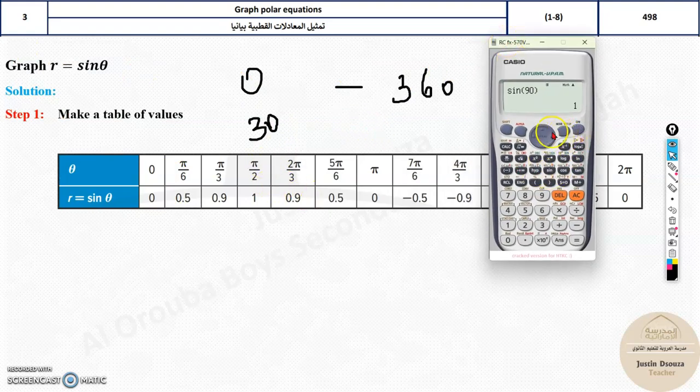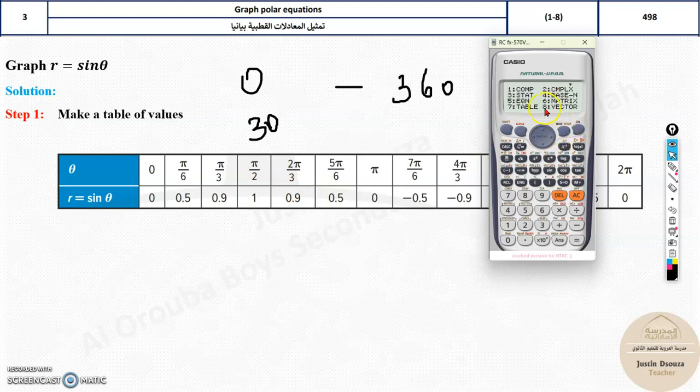So there is a shortcut method. You can do it in your calculator. All you need to do is press mode and you can see there is a table. This is the table of values, right? Let's click on that table. What is the function you need to find the table of values for? It's sinθ, right? So put sine. There is no theta option, but there is x. So f(x) = sin x. Then press equal to. We are dealing only with one equation. So ignore this. f(x) is submitted, it's fine. g(x) is nothing. Press equal to again.